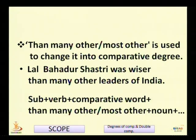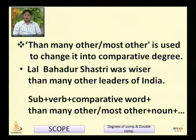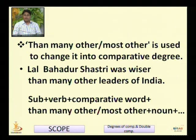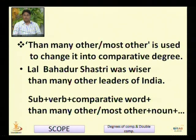'Then many other' or 'most other' is used to change this type into comparative degree. For example: 'Lal Bahadur Shastri was wiser than many other leaders of India.' So the sentence pattern is: subject + verb + comparative word + 'many other' or 'most other' + noun in plural. Unlike the first type where 'any other' is used with a singular noun, here 'many other' or 'most other' is used with a plural noun.